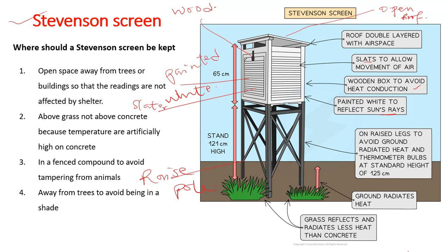Now, why do these individual characteristics exist? It has an open double-layer roof to allow air spaces. It is slated so air can easily circulate inside the box. It is made of wood to avoid conduction of heat. It is painted white to reflect sunlight. And it is on raised poles so that heat radiated from the earth's surface will not affect the readings inside the Stevenson screen.